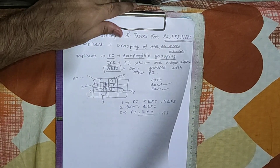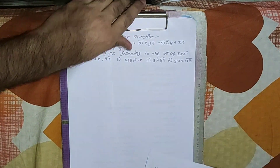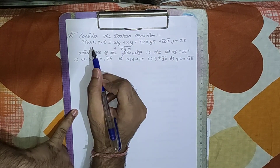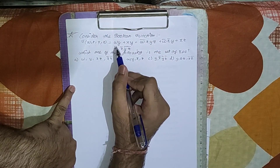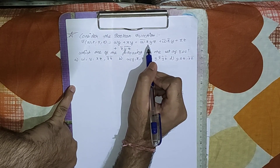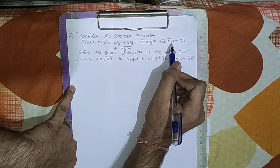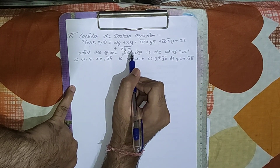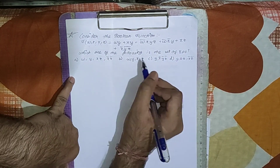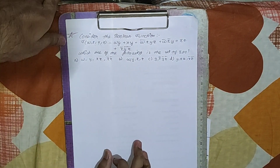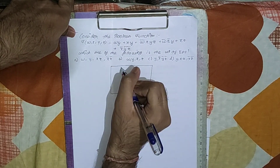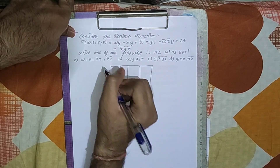Now we will see a problem which came in the GATE exam. Consider the Boolean function F(w,x,y,z) = wy + xy + w̄xyz + w̄x̄y + xz + x̄ȳz̄. The question is: which one of the following is the set of essential prime implicants? So basically we need to find out the set of EPIs, so first let us make a KMAP of this.